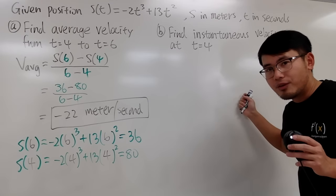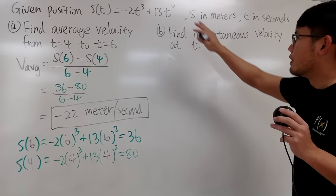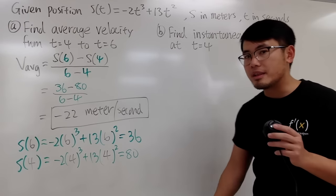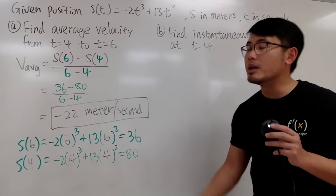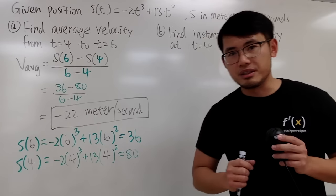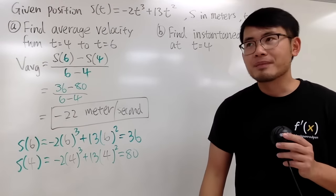On the other hand, if you want to find the instantaneous velocity of the moving particle when t is 4, we have to do some calculus. Then you can just do the derivative, because the first derivative tells you the instantaneous velocity.